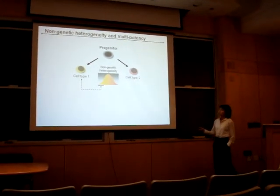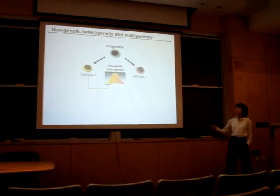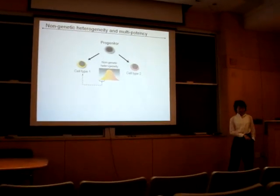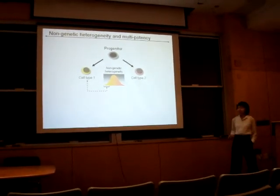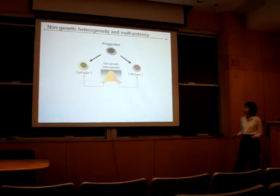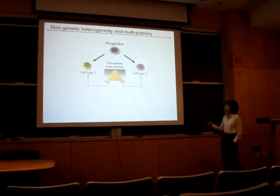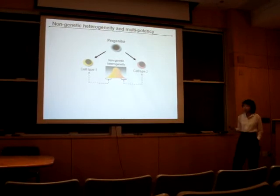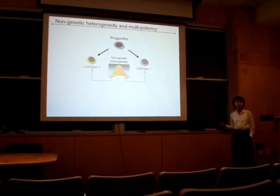Thereby, if you isolate cells which are most likely to become the yellow cells, and then give them similar instructions, they'll very efficiently do that. On the other hand, cells which are more likely to become the pink cells — they would also do that.